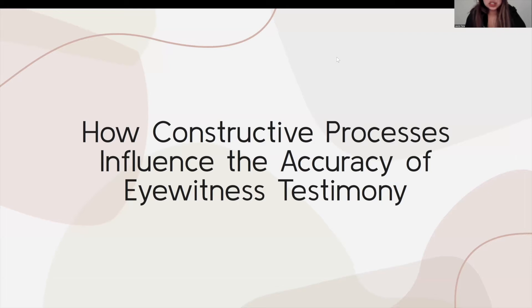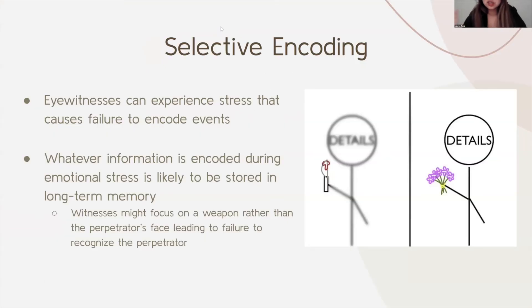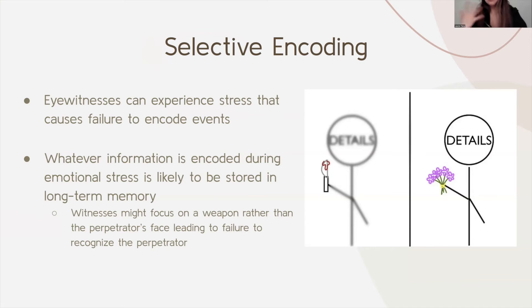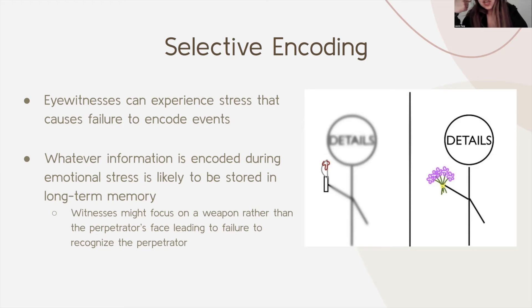Now we're going to talk about how constructive processes — how we encode and retrieve memories — influence the accuracy of eyewitness testimony. First, selective encoding: eyewitnesses can experience stress that causes failure to encode events, and whatever information is encoded during emotional stress is likely to be stored in long-term memory. For example, if a perpetrator is holding a weapon like a gun or a knife, the witness is likely to focus on that rather than the face, which means it will be harder for the perpetrator's face to be encoded in memory and for the witness to identify that person later on.